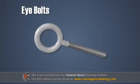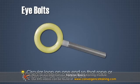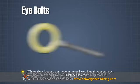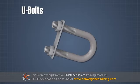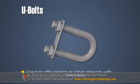Eye bolts, which have a circular loop on one end so that rope or chain can be attached to it. U-bolts, which are formed in a U-shape and used to affix piping or other objects with round surfaces to a material.